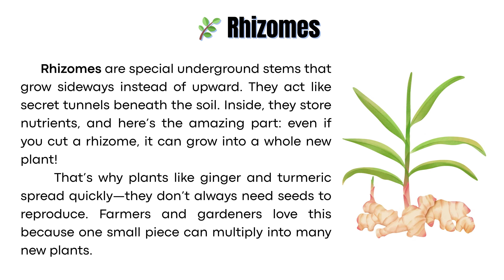Rhizomes are special underground stems that grow sideways instead of upward. They act like secret tunnels beneath the soil. Inside, they store nutrients. And here's the amazing part — even if you cut a rhizome, it can grow into a whole new plant. That's why plants like ginger and turmeric spread quickly. They don't always need seeds to reproduce. Farmers and gardeners love this because one small piece can multiply into many new plants.